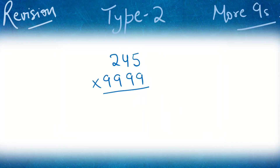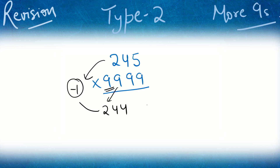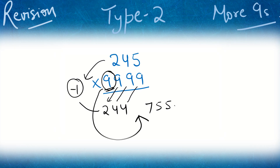Now Type 2, where nines are more. What you do: keep the extra 9 aside. Then subtract 1 from the first number — you get 2, 4, 4. Now subtract those digits from nines: 9−2 is 7, 9−4 is 5, 9−4 is 5. Now just pick that extra 9 and put it in the middle of these two numbers. So 2,4,4,9,7,5,5 is your final answer.